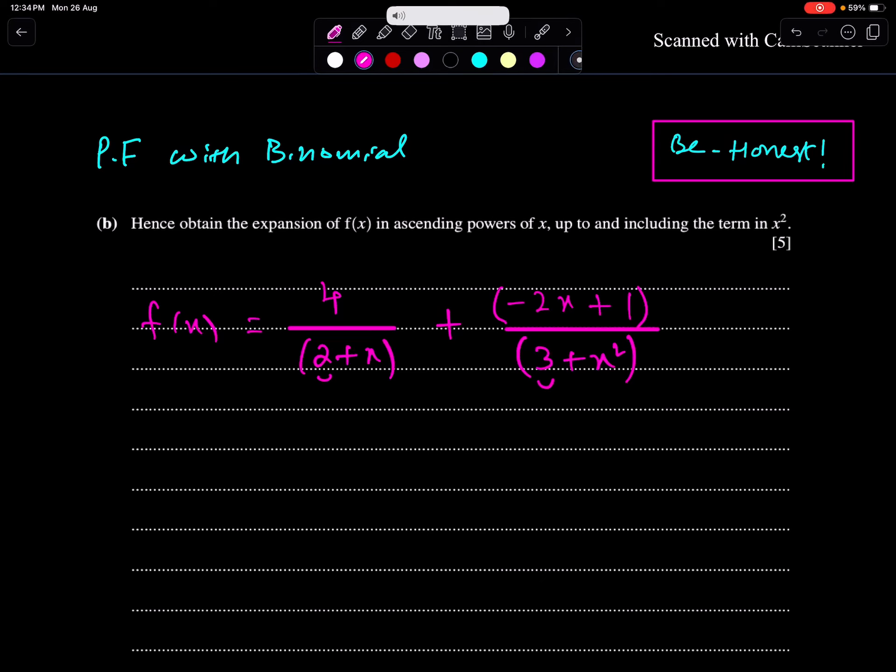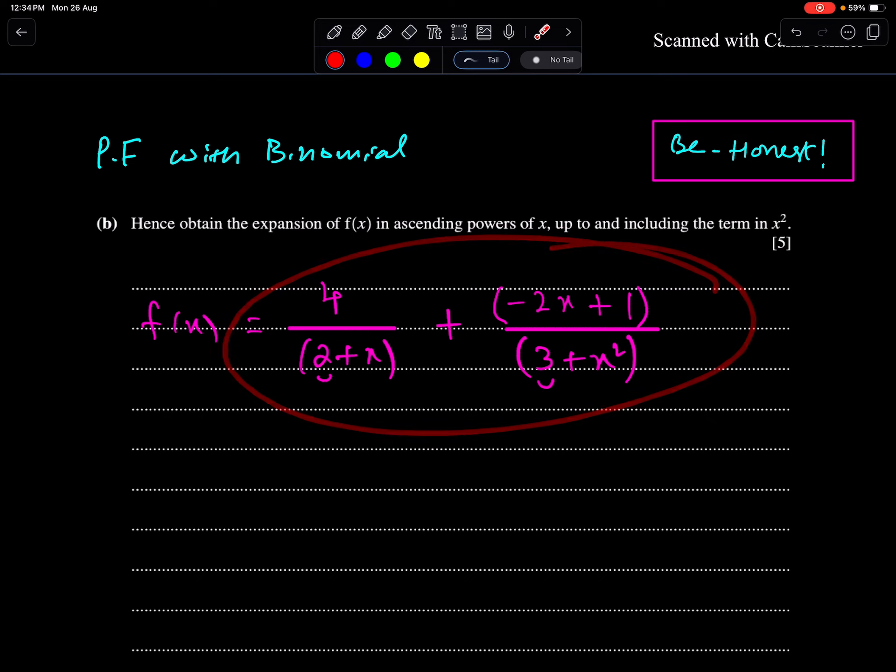An important advice, we should be honest. This is the example question of partial fraction with binomial. Partial fraction is given and we have to expand f of x in ascending powers of x up to and including the term in x square.